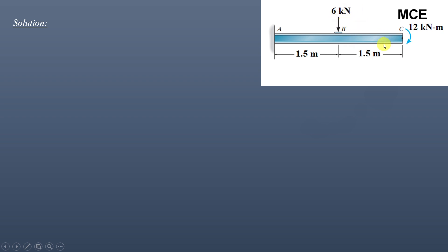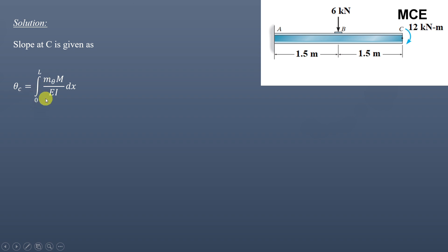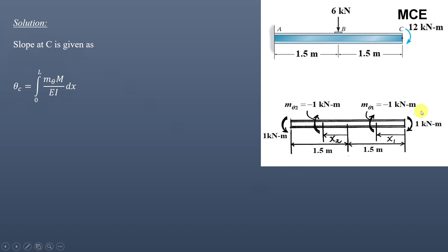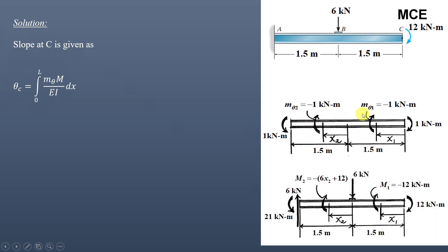Since the units here are in kN, to find the slope at point C we will apply a virtual moment of 1 kNm at point C in the clockwise direction, and for that we have to find the free body diagram of this beam. The slope is given by integrating (mθ · m) / EI from 0 to L, where mθ is the moment at any section due to the virtual moment and m is the moment due to the real loading.